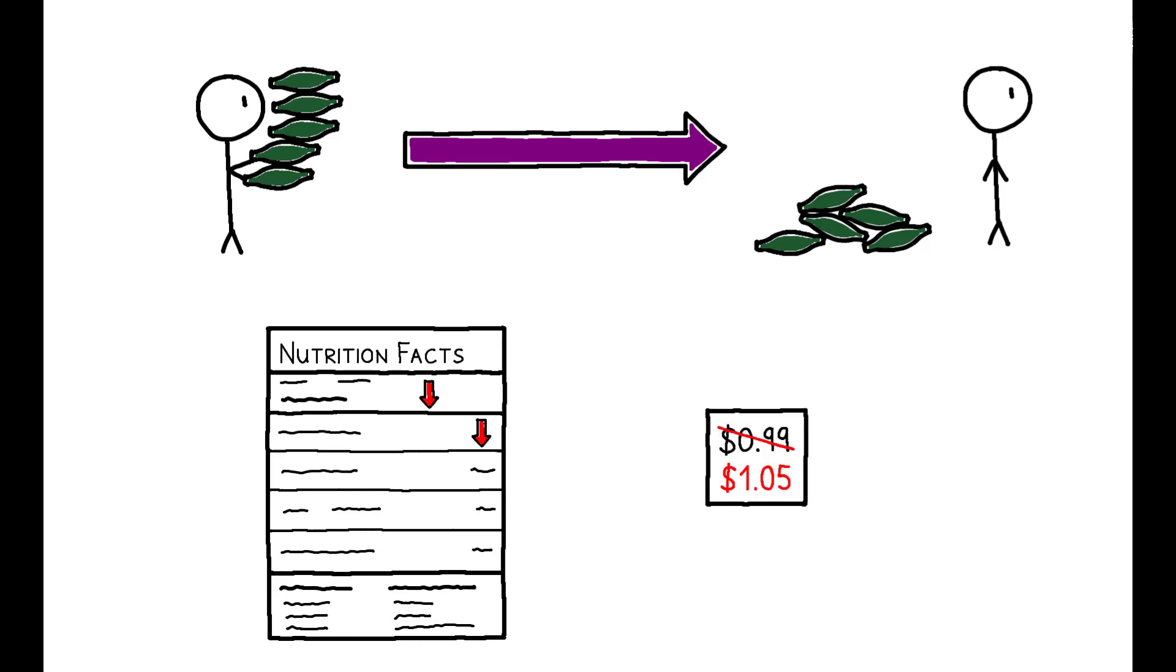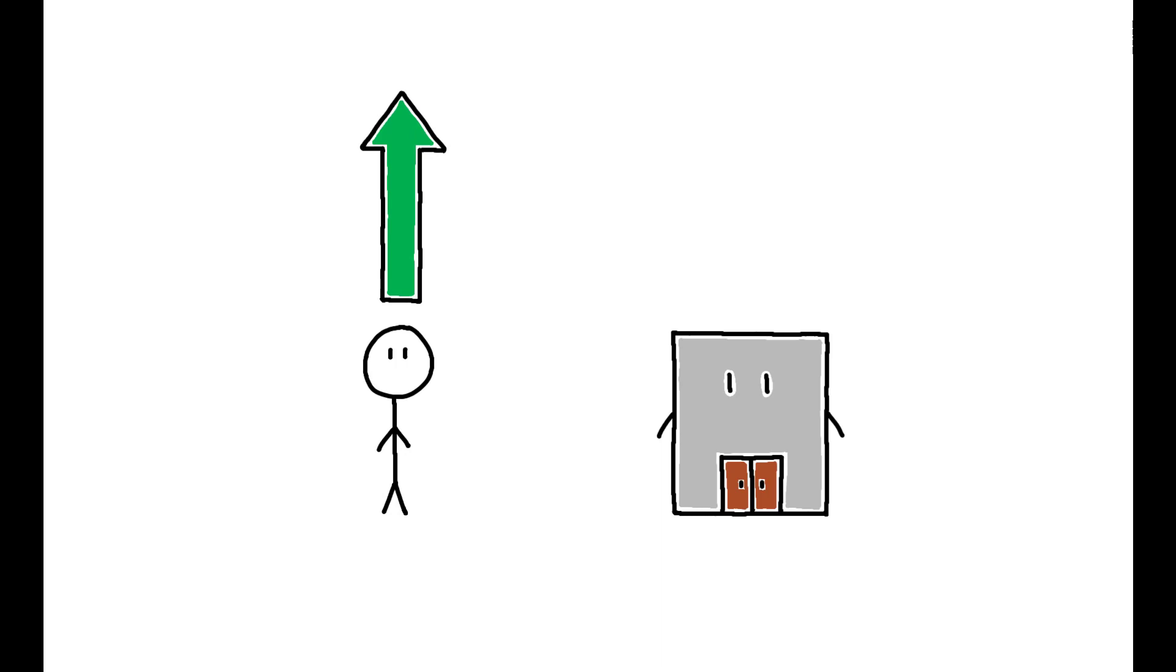To assess the overall impact, the authors estimate a model of demand and supply in the market for food. Their results show that the Food Act led to overall gains in consumer welfare, and supply-side responses amplified these gains. The benefit to consumers of product reformulations outweighed the cost of higher prices.